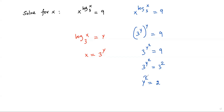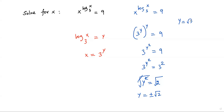To solve for y, I have to get rid of the square. So I take the square root on both sides. The square root and square cancel out, giving y on the left side. When taking a square root, the sign is positive or negative. So on the right side we have plus or minus square root of 2. Therefore y is equal to positive square root of 2 or negative square root of 2.